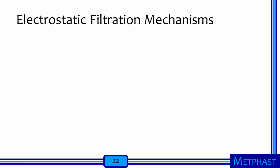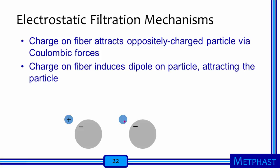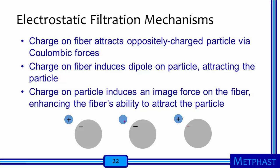A charge on a fiber can attract oppositely charged particles by coulombic forces — a negative charge on a fiber will enhance collection of a particle carrying a positive charge, and vice versa. Because most electrostatically charged filters carry both negative and positive charges on their fibers, the capture of both positively and negatively charged particles is enhanced. If a fiber carries a negative charge but a particle is neutral, the charge on the fiber can induce a dipole within the particle that causes the neutral particle to be drawn toward the fiber. If a fiber does not carry a charge but a particle does, the particle, if it gets close enough to the fiber, will induce an image force on the fiber that enhances the fiber's ability to attract the particle.